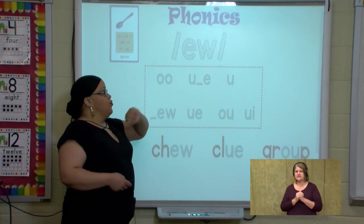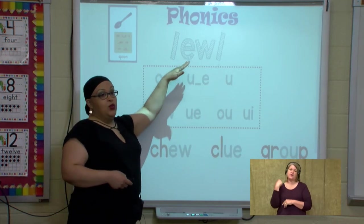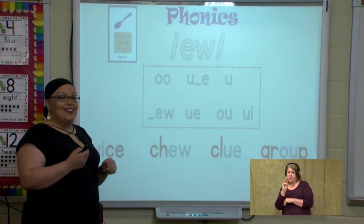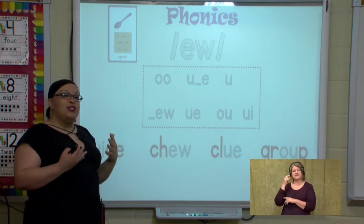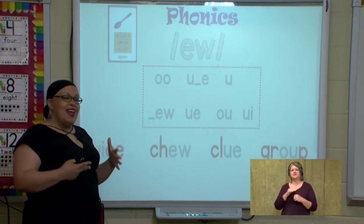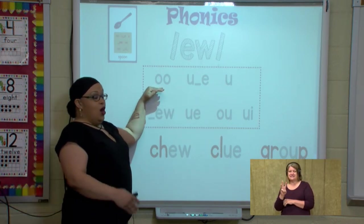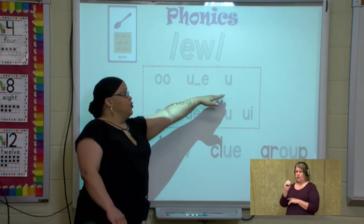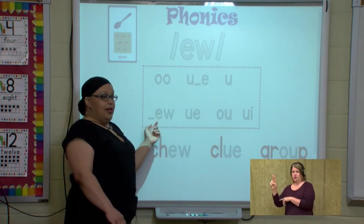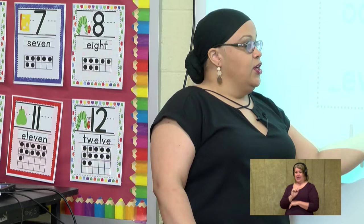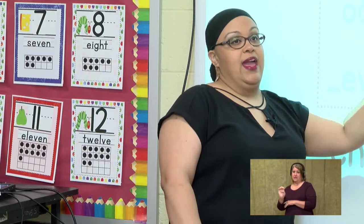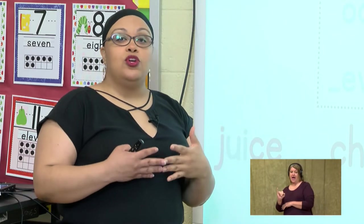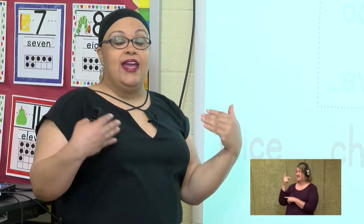So Monday we were working with the oo sound. Can you say oo? Good job. Remember, the oo sound has seven different spellings: O-O, U blank E, U by itself, E-W, U-E, O-U, and U-I. So when you see these sounds, you're going to say oo.